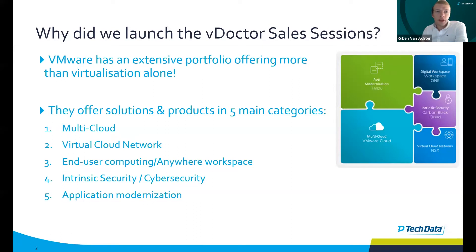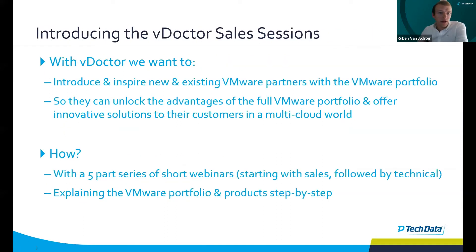VMware has a pretty big and extensive portfolio of products and solutions. They are well known for their virtualization software in the market, but they offer way more than virtualization alone, and that is what we would like to show you during the VDoctor sales sessions. VMware offers products and solutions in five main categories: multi-cloud, virtual cloud network, end-user computing or anywhere workspace, intrinsic security, and application modernization. With VDoctor we want to introduce and inspire new and existing VMware partners with the VMware portfolio so they can unlock the advantages of the full VMware portfolio and offer innovative solutions to their customers in a multi-cloud world.